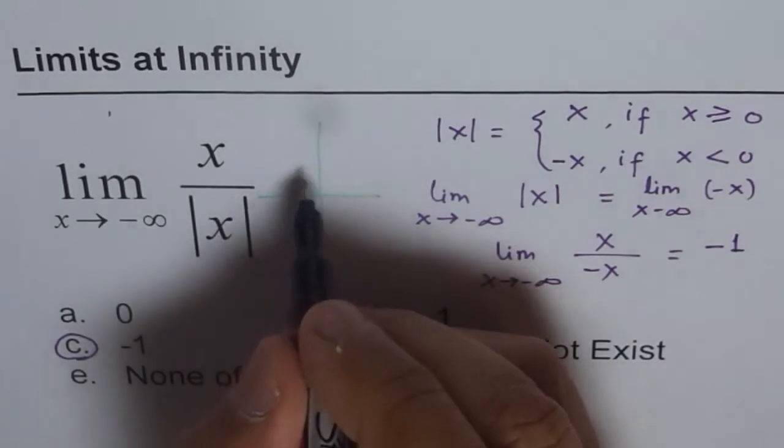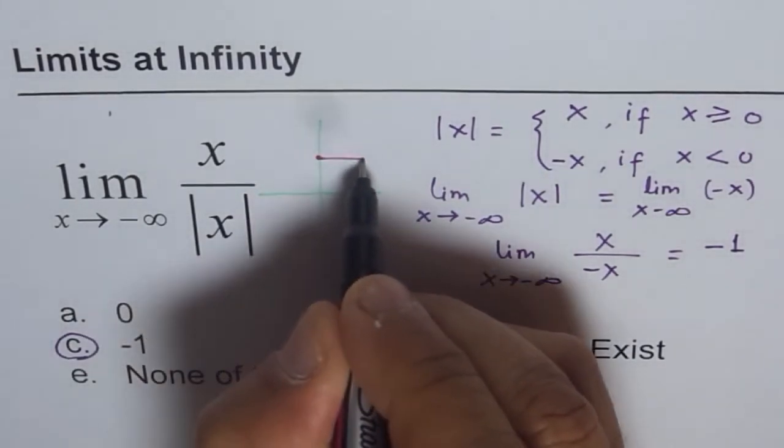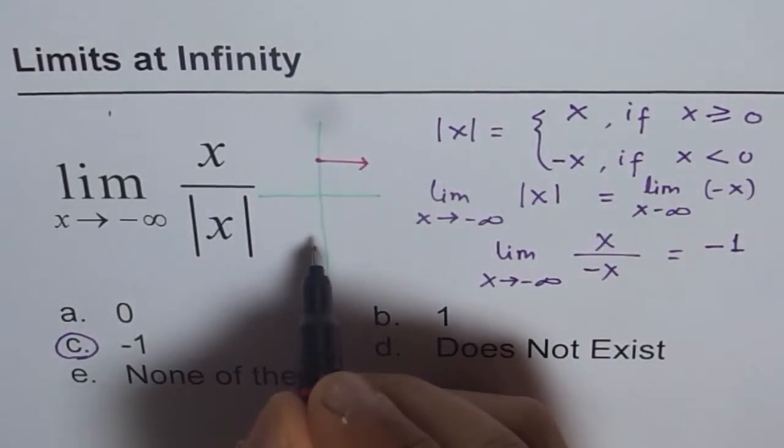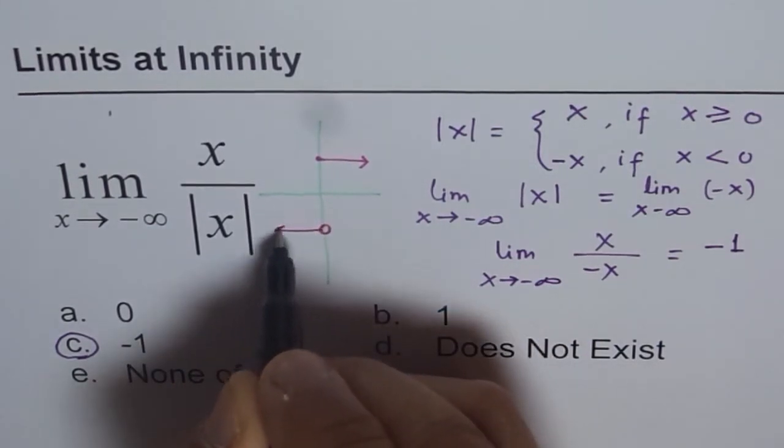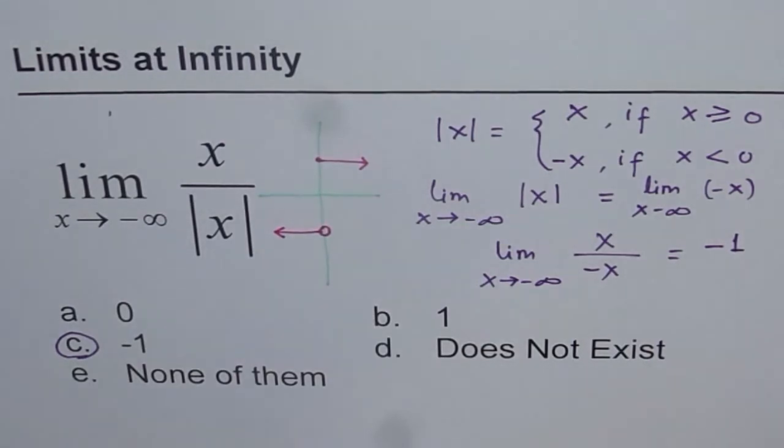x over absolute x equals 1 as it goes in this direction, which is the positive x direction. But it equals negative 1 when it goes in the negative infinity direction.